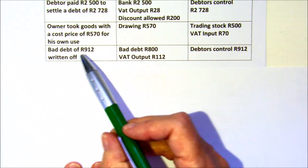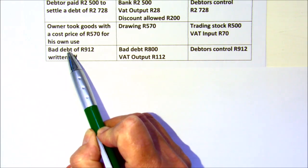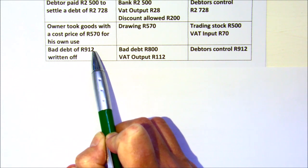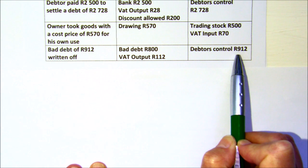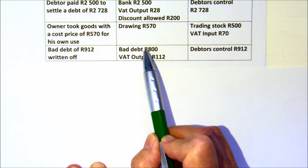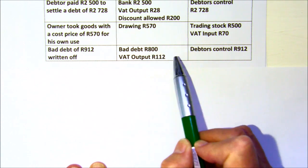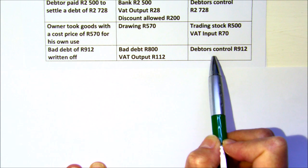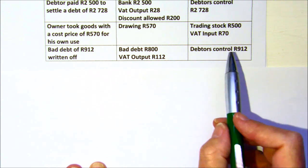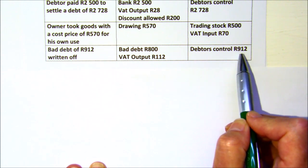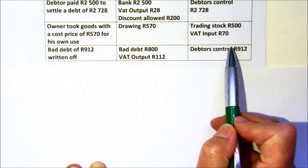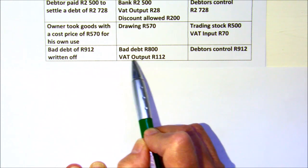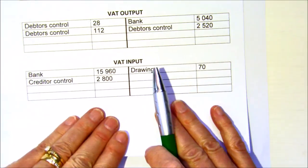If you have a bad debt, you are writing off the debtor's account, which is the inclusive amount. If a debtor owed 912 rand and you're not going to receive it, you cancel it out of the debtors account. SARS acknowledges that in that 912 there is some VAT, and since this is a legitimate business expense, you don't have to pay the VAT on money you're not receiving. You can only claim back the VAT portion — doing the calculation on the inclusive amount, your expense is 800 exclusive, and the VAT output portion of 112 you are now claiming back.